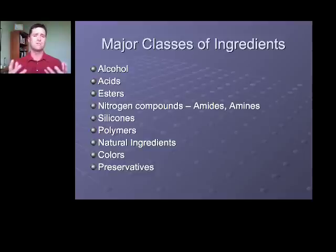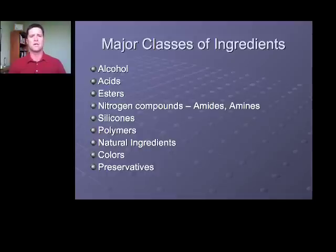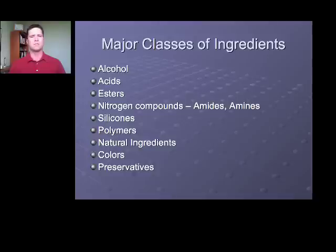There are a bunch of major raw material classes of ingredients used in cosmetics. These include alcohols, acids, esters, and nitrogen-containing compounds with names like amides and amines. Then there are silicones, polymers, and natural ingredients like herbal extracts and other naturally derived materials. Colors and preservatives also round out the different types of ingredients used in cosmetics.